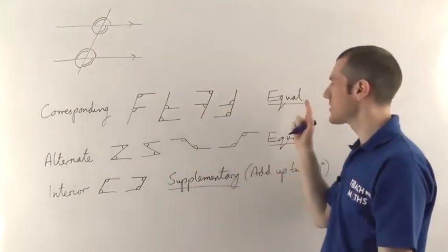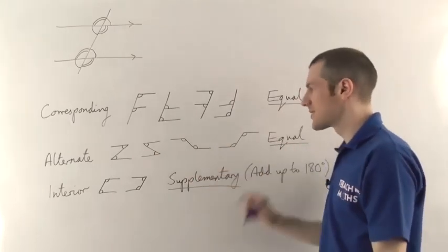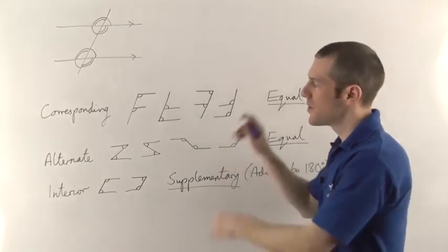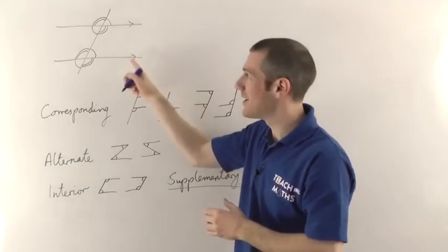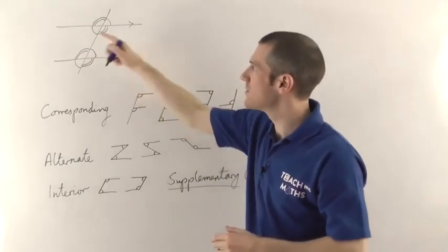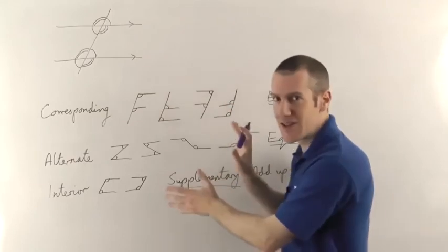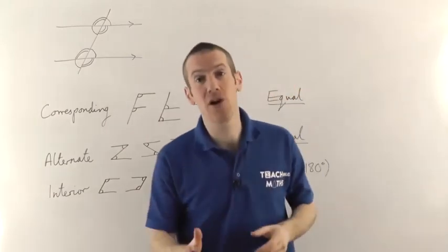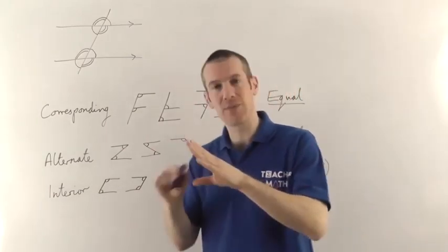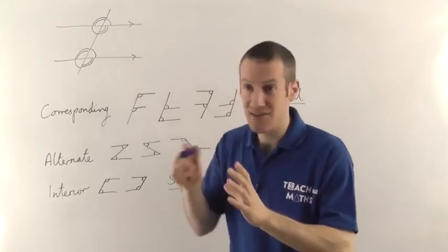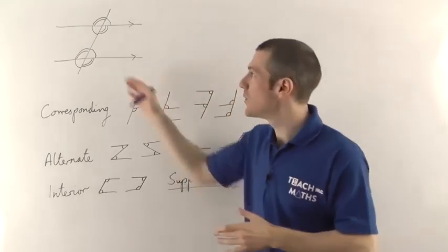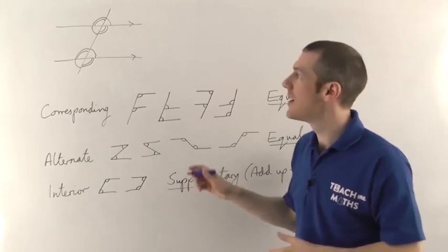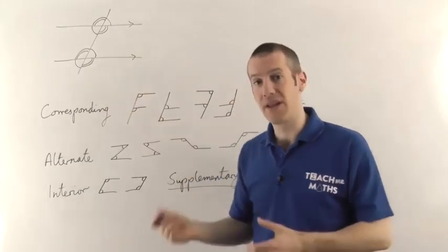So just remember that F shapes give you equal angles, Z shapes also give you equal angles, but C shapes give you supplementary angles — they add up to 180 degrees. But this only applies for parallel lines. If you don't have two parallel lines and a line crossing them, you can't use these rules. Parallel lines do crop up quite a lot though — in a parallelogram, a rectangle, and many other shapes. Those are the main facts you should be aware of, as well as vertically opposite angles being equal. I'm going to do another video showing you how to use these facts to solve problems.